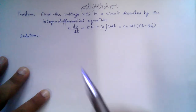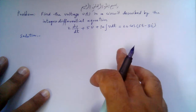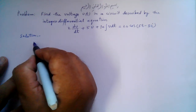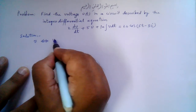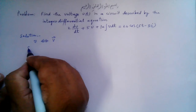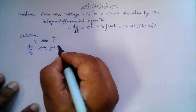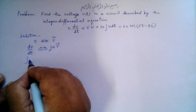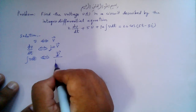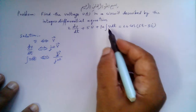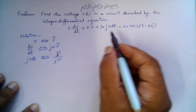We use the phasor domain to demonstrate that this calculus problem is reduced to a simple algebraic operation. We know that if V is a time-domain function, in the phasor domain it is represented by V̄. Then dV/dt reduces to a simple multiplication — that is jωV̄ — and the integral ∫V dt reduces to V̄ divided by jω.